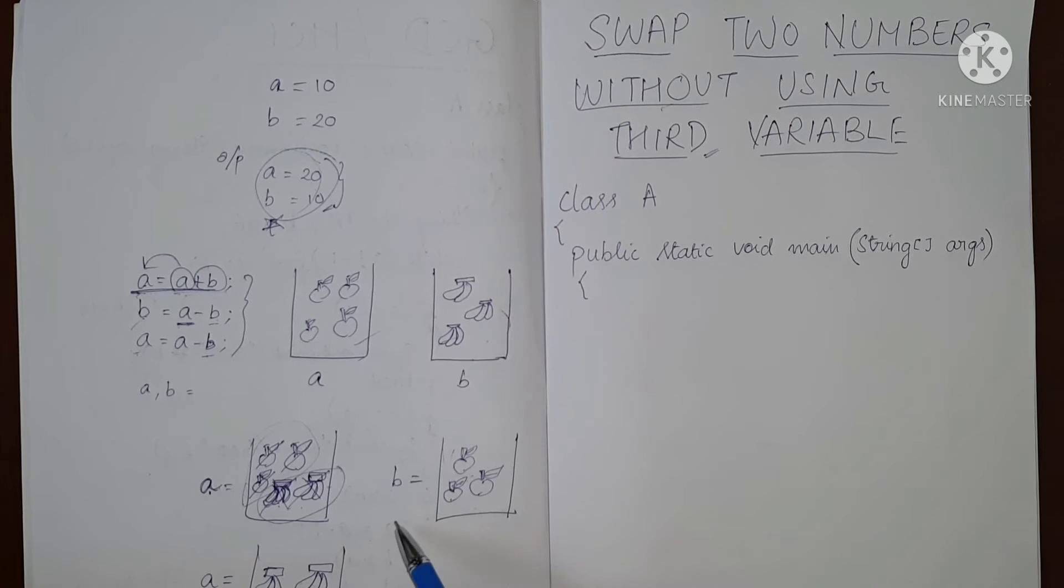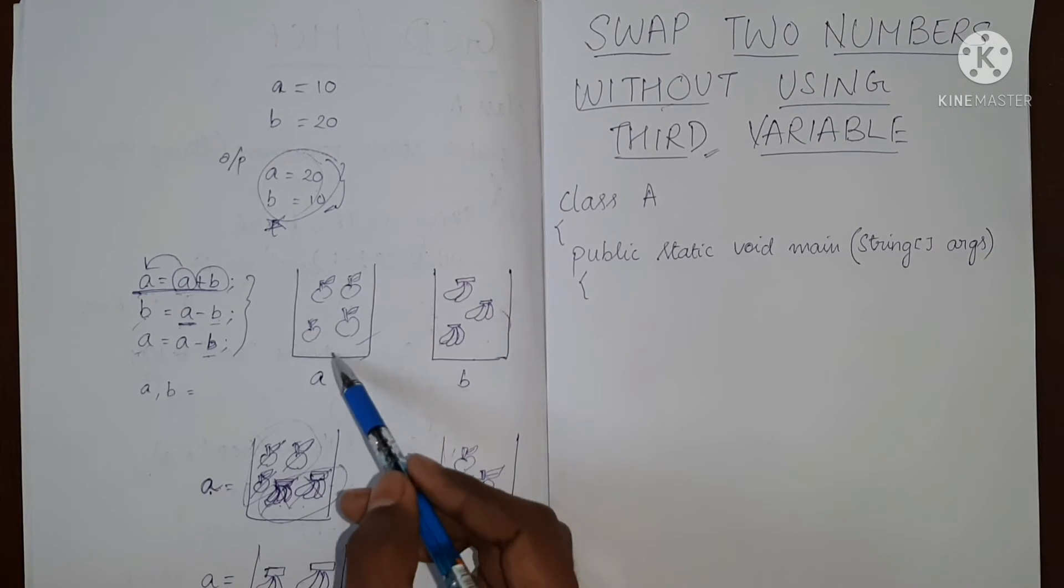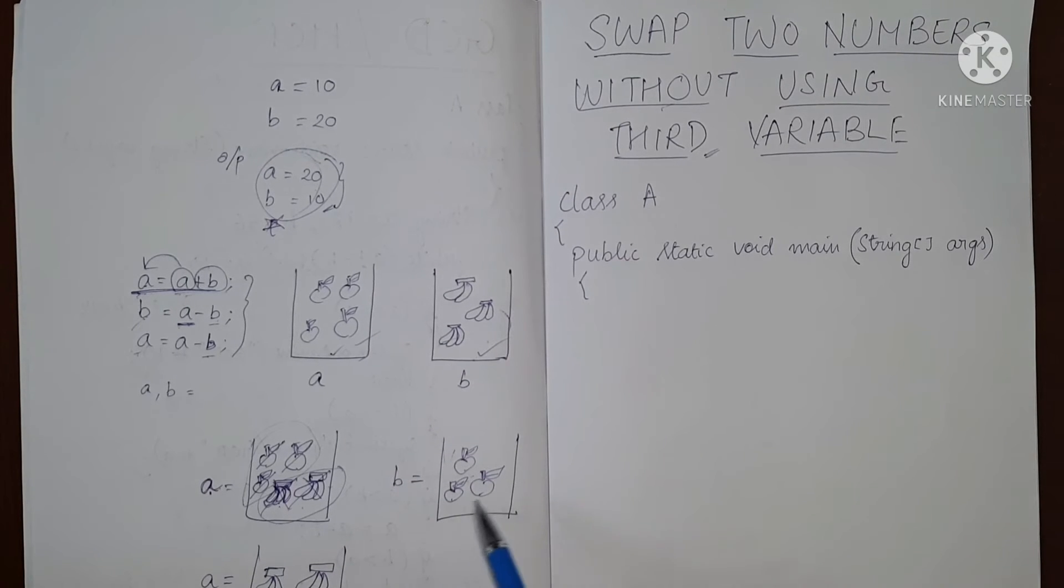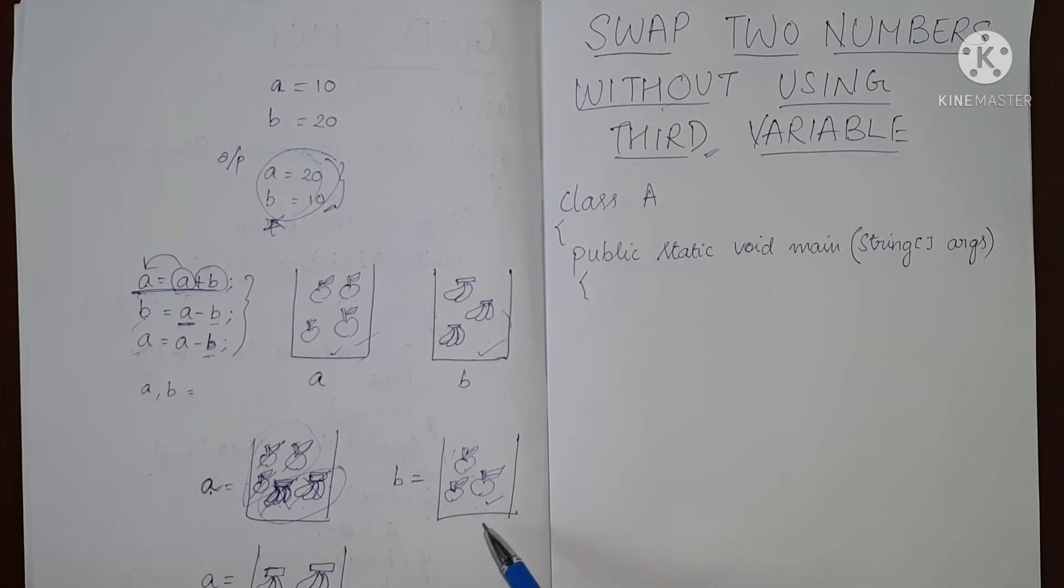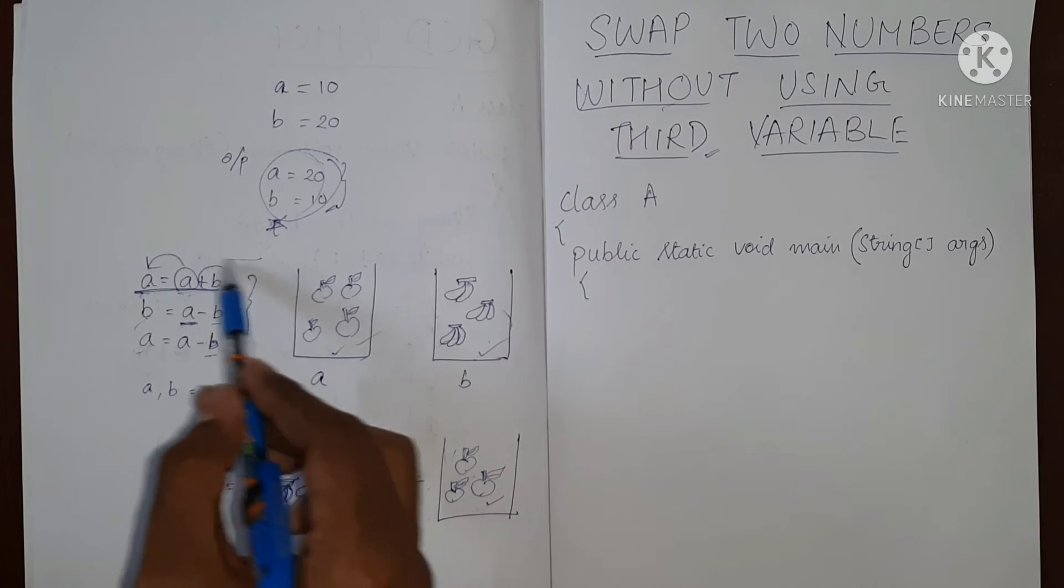So at the end, if you see the result, initially we were having a as apples and b as bananas. And at the end, you can see that a has now bananas and b has apples. So this is the logic behind this.